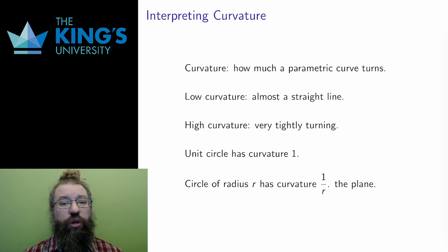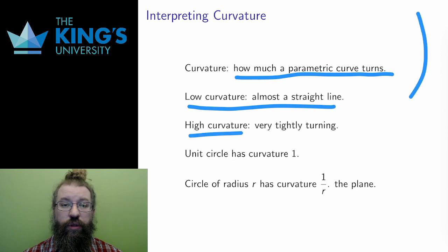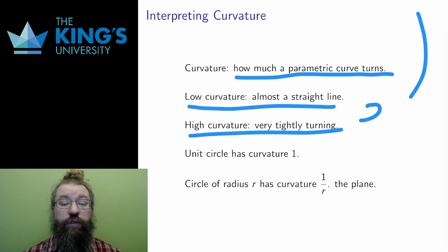Curvature measures the curving of a parametric curve, how it changes direction, curving to the right or curving to the left. A low curvature is almost a straight line, and a high curvature is a very tightly turning curve. This can be compared with a circle. A unit circle has curvature of exactly one.